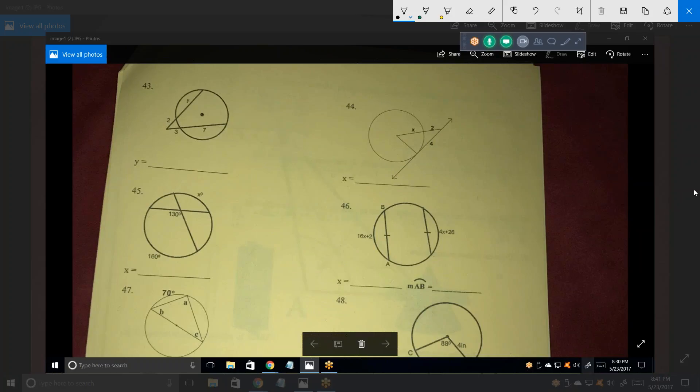46. The fact that they have a hash mark there means those two chords are equal. What has to be true about the measurements of the arcs? The arcs would be equal? They have to be equal also. So 16X plus 2 equals 4X plus 26. Solve that. 12X would equal 24. And then X would equal 2.